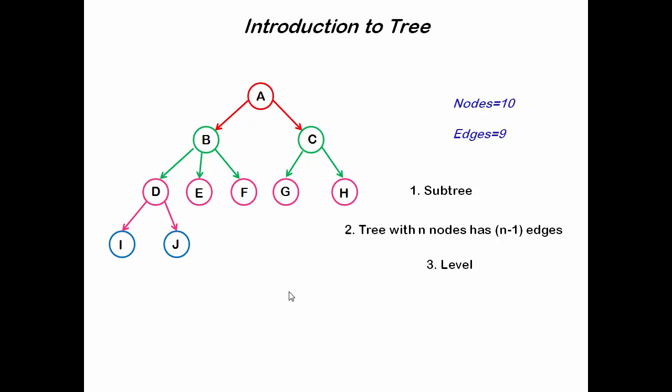Number three is level. Each node in a tree is assigned a level number. The root node of the tree is assigned the level number 0 and every other node is assigned a level number which is 1 more than the level number of its parent.